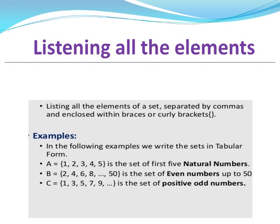A = {1, 2, 3, 4} is the set of first 4 natural numbers. B = {2, 4, 6, 8, ..., 50}. This means up to 50, all the even numbers. This is the set of even numbers up to 50.